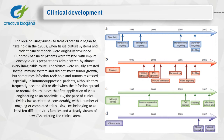Since that first application of virus engineering to an oncolytic HSV, the pace of clinical activities has accelerated considerably, with the number of ongoing or completed trials using oncolytic viruses belonging to at least 10 different virus families, and a steady stream of new oncolytic viruses entering the clinical arena.